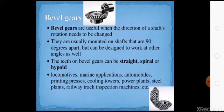Next one is bevel gears. Bevel gears are useful when the direction of the shaft rotation needs to be changed. Bevel gears can be straight, spiral, or hypoid. Applications include locomotives, marine applications, automobiles, printing presses, cooling towers, power plants, steel plants, railway track construction machines, etc.